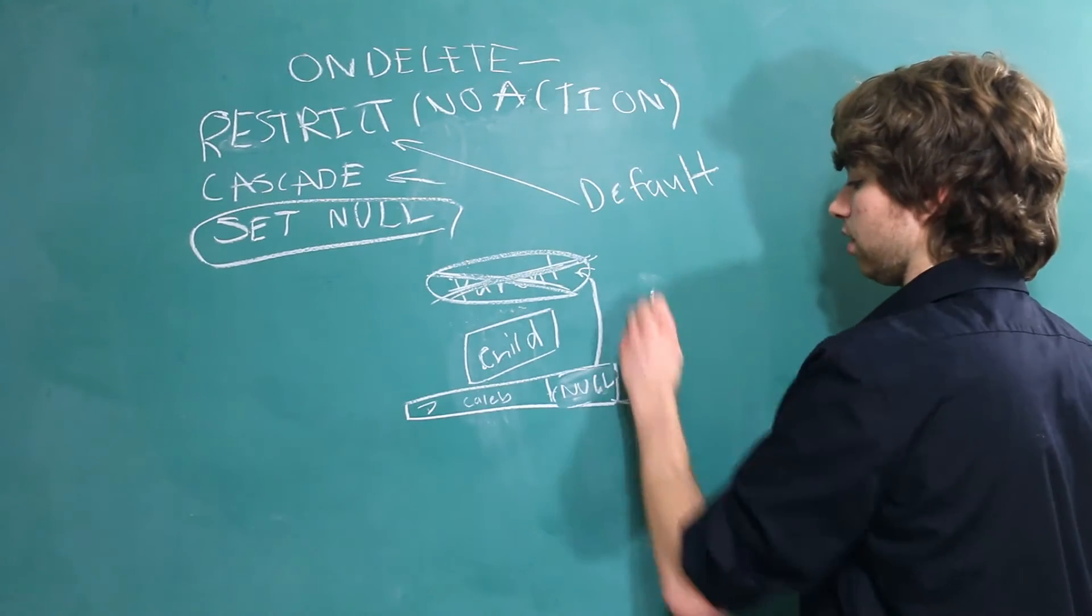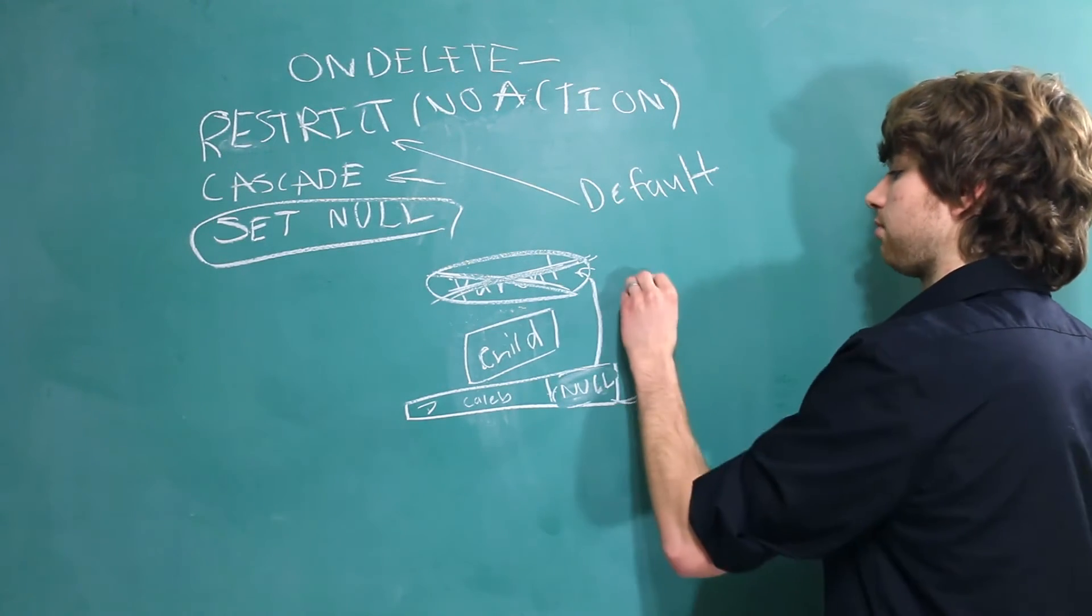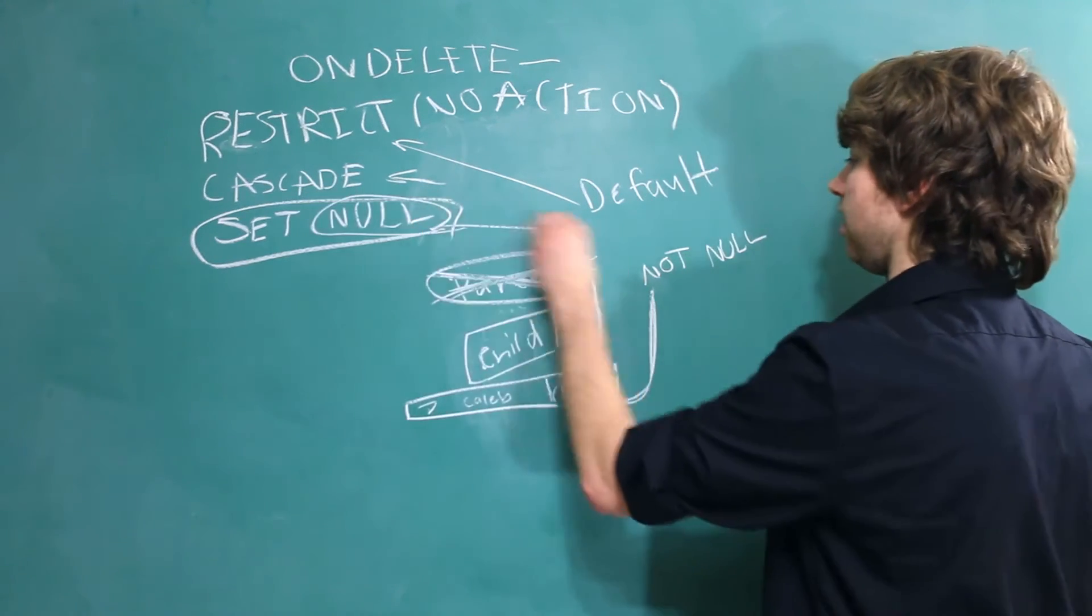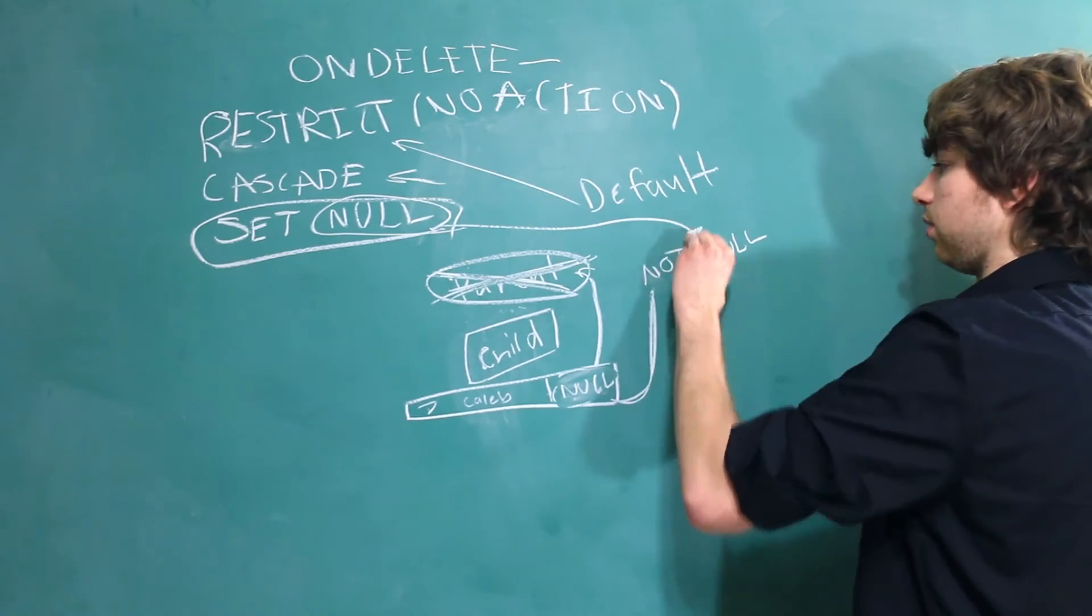The important thing to remember here, though, is that this column cannot be set to NotNull. Because you couldn't put a null inside of a NotNull column. So that's not going to work.